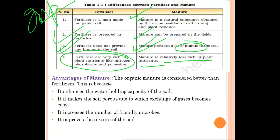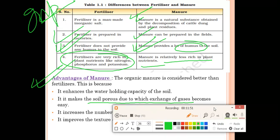Organic manure is considered better than fertilizer. The advantages of manure are: it enhances the water holding capacity of the soil; it makes the soil porous, allowing easy exchange of gases; it increases the number of friendly microbes in the soil, which decompose organic matter and increase the humus or nutrient content; and it improves the texture and quality of the soil.